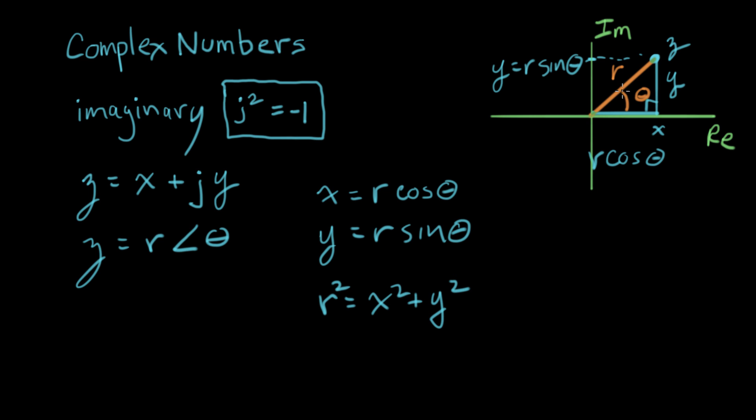And now if I want to find theta, I use another little bit of trigonometry. Tangent is opposite over adjacent. Opposite over adjacent is y over x. So tangent of theta equals y over x.